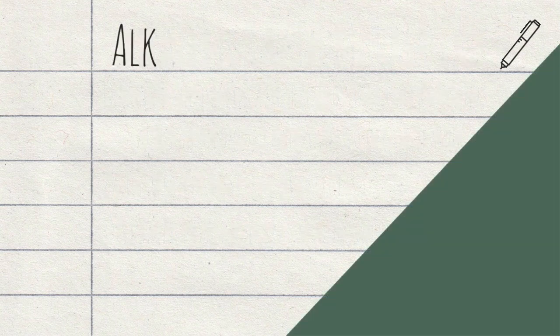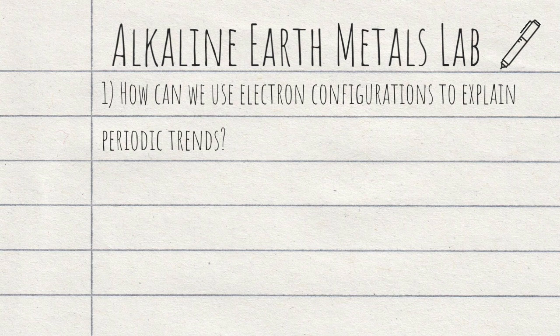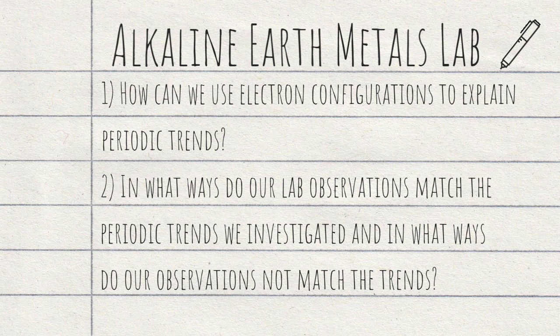Before we see the reactions, let's talk quickly about our driving questions for this lab. First, how can we use electron configurations to explain some of our observations and periodic trends that we've been seeing in our labs? And second, in what ways do our observations match the data for these periodic trends, and in what ways do our observations not match these data?